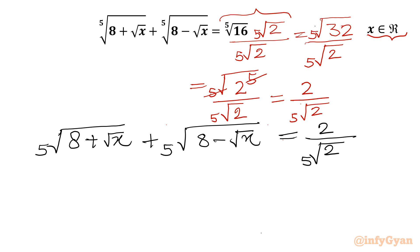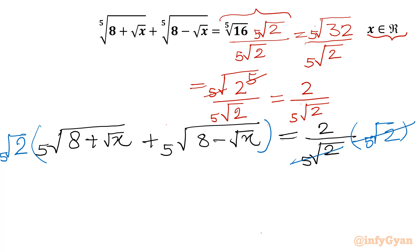Now let us multiply both sides by the denominator 5th root of 2. On the right hand side, I will cancel these two, so RHS is 2. On the left hand side, I need to multiply by 5th root of 2 as well: 5th root of 2 times 5th root of (8 plus square root x), which I can write as 5th root of (16 plus 2 square root x).